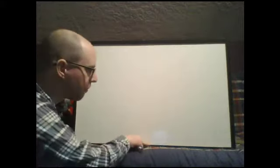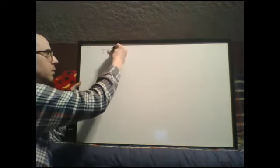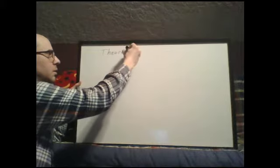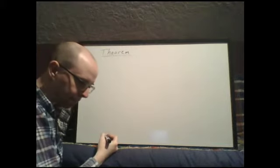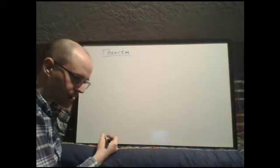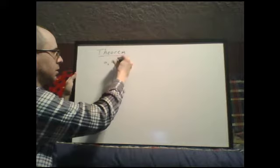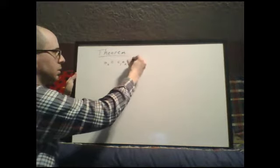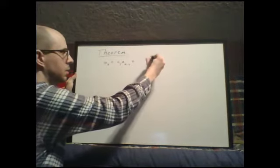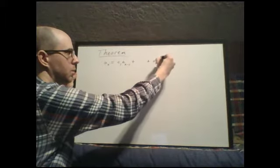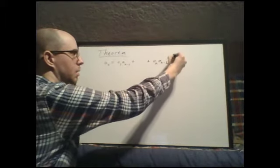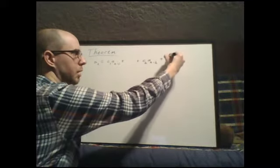Alright, back after a break for more non-homogeneous recurrence material. We have our recurrence a_n minus k, but it's non-homogeneous, so we have our extra function f of n.